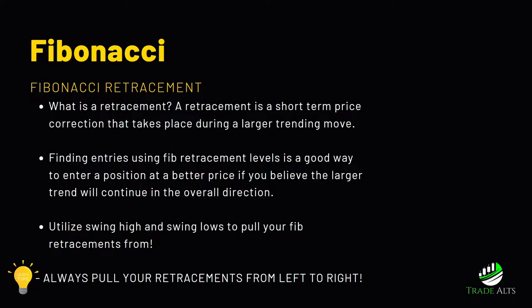When you're buying pullbacks, you're buying retracements, and if they come to certain specific levels those typically end up being better risk-reward entries. When pulling your Fib retracements, you always pull them from a swing high and a swing low — or vice versa — using market structure to determine those points. Always pull your retracements from left to right. Anyone who tells you to go right to left, I would be very careful listening to.